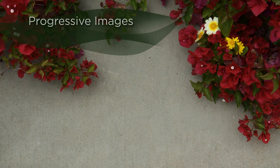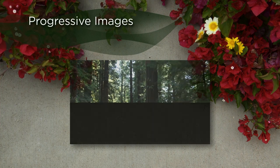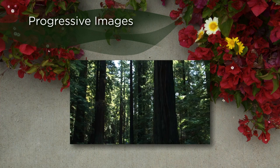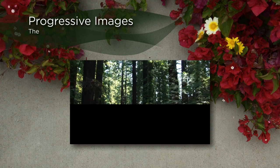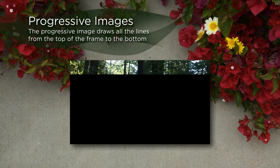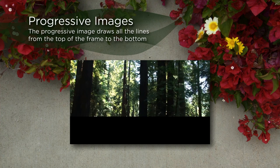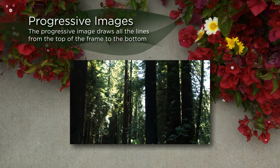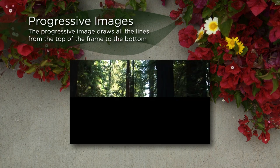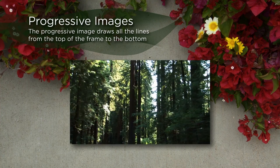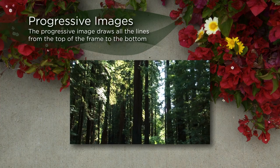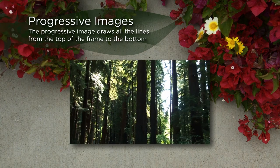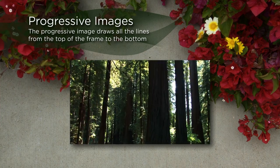What does progressive mean? The progressive method draws a complete frame, or the whole image, all at one time. Instead of showing you an image piece by piece, progressive displays it all at once. Because of the way progressive draws, images do not flicker or tear at the edges of motion.